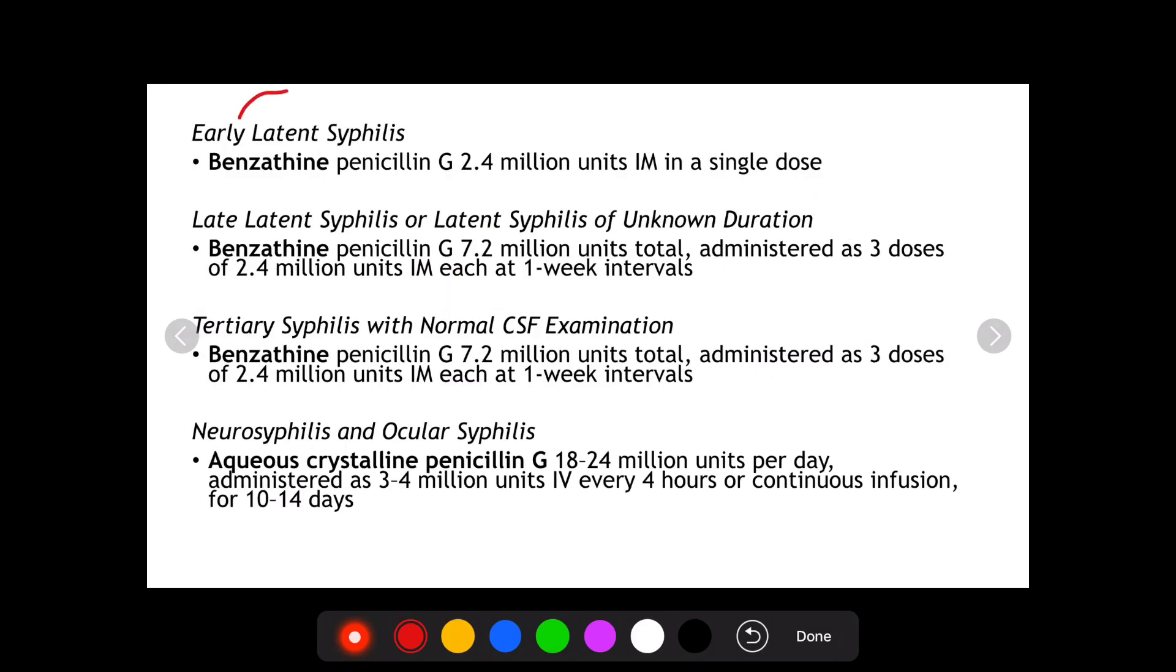If the patient has latent syphilis, and he has early latent syphilis, the entire duration is less than 2 years. Again, the treatment is similar as primary and secondary. One single dose of 2.4 million units intramuscular benzathine penicillin. Now, if he has late latent syphilis, or if he has latent syphilis and the duration is unknown, it's better to give a higher dose. In that scenario, we give 7.2 million units in total, which is 2.4 million units weekly, and 3 doses are given. A total of 7.2 million units of benzathine penicillin.